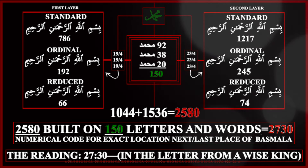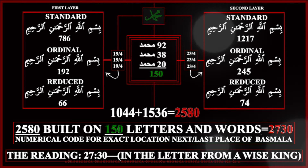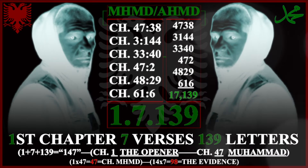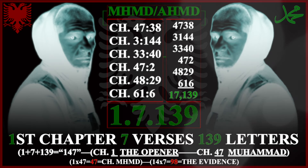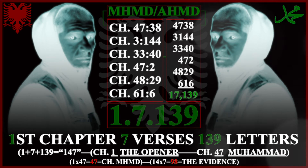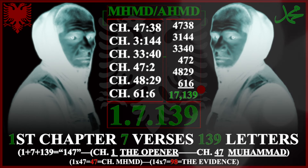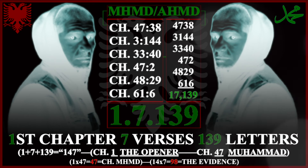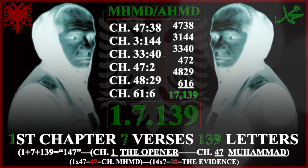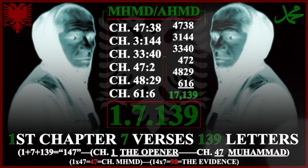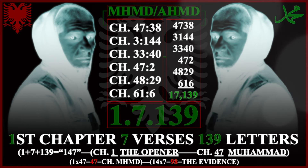Six-part science, and six times his name occurs in the whole text of the Quran. If we take the places Muhammad occurs in the Quran and add them as whole numbers, we get 17,139. 17,139 is chapter 1, 7 verses, 139 letters — the whole chapter of Al-Fatiha.